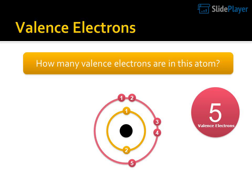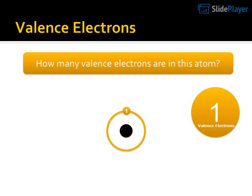How many valence electrons are in this atom? 5. Valence electrons? 4, 4, 2, 5.